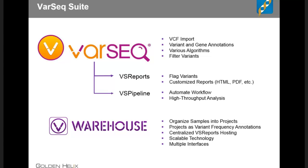Once you've created projects within the VarSeq desktop application — either manually or via the automated pipeline — our warehouse functionality can organize samples into projects, create variant frequency annotations, and centrally host completed reports. With the warehouse you can ask questions like: have I seen a particular variant before, and at what frequency? Or have I reported this variant in a clinical report, and what was the determination? The warehouse has extremely scalable technology and multiple interfaces. Today we'll focus on the desktop application plus some reporting functionality.